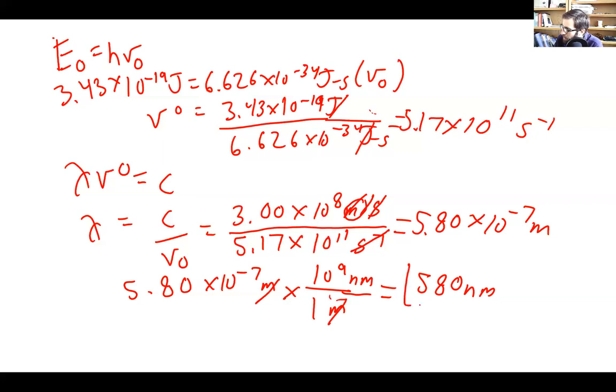Okay, so 580 nanometers is our final answer. We look on our chart, that's going to be yellow light. Okay, and so that's pretty much it for this problem.